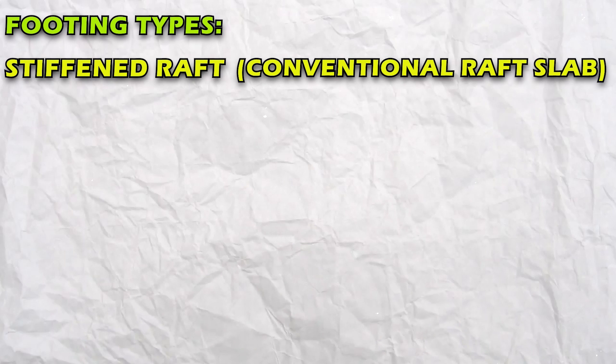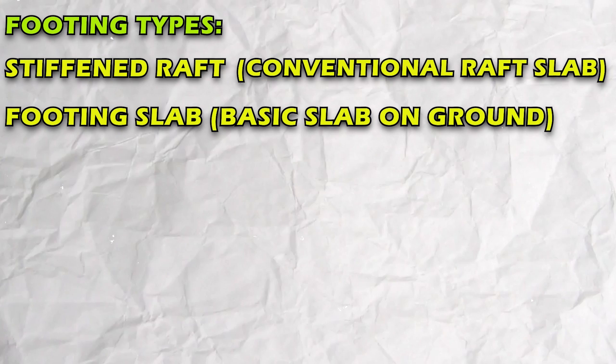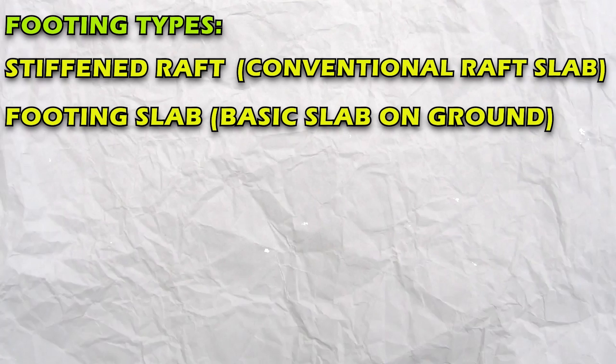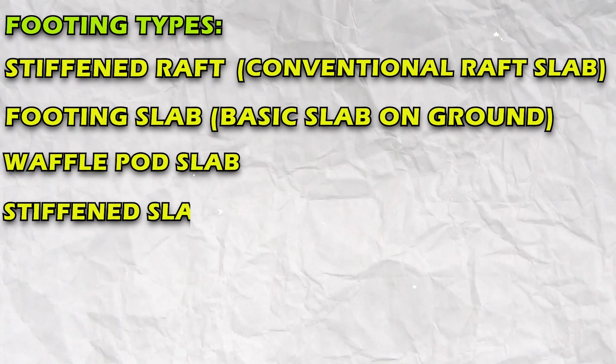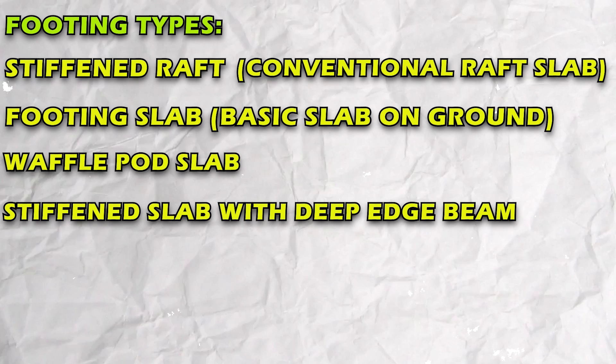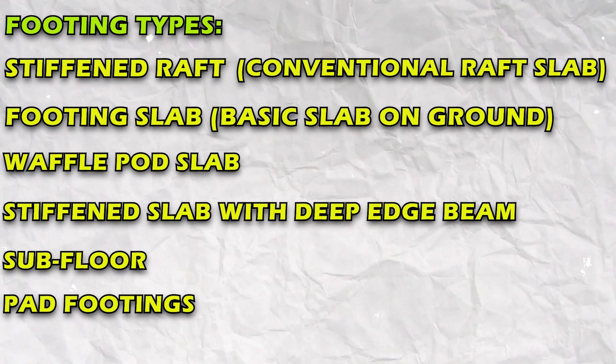Shallow foundation types include the following: stiffened raft or conventional raft slab, footing slab or basic slab on ground, waffle pod slab, stiffened slab with deep edge beam, subfloor, and pad footings.